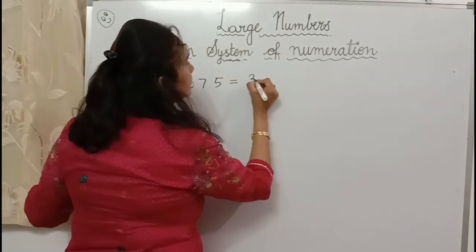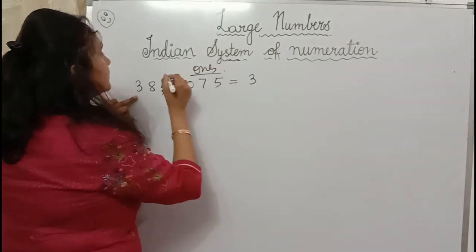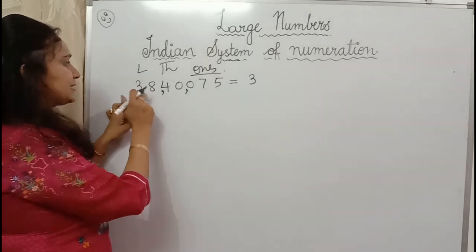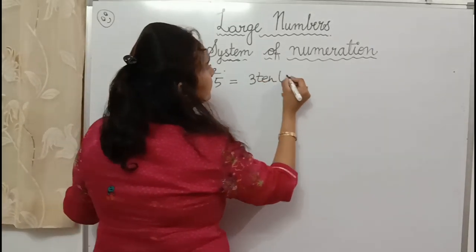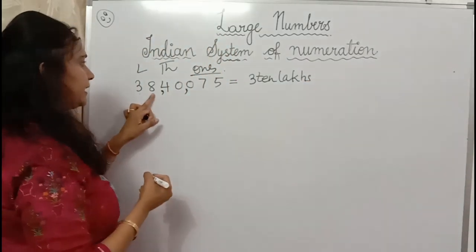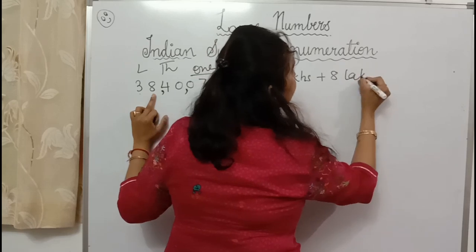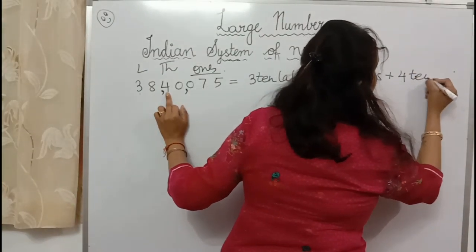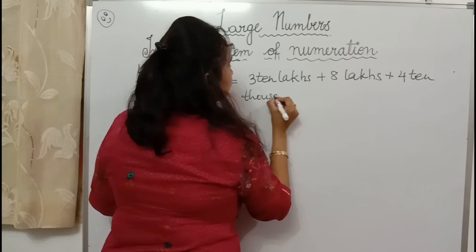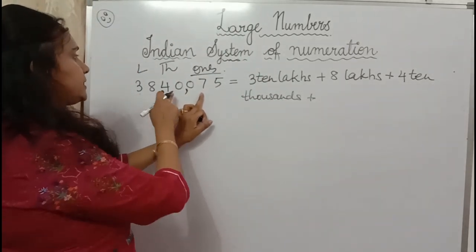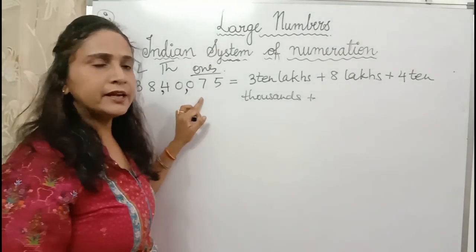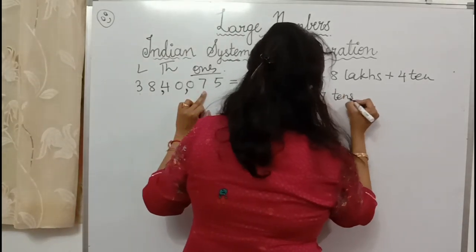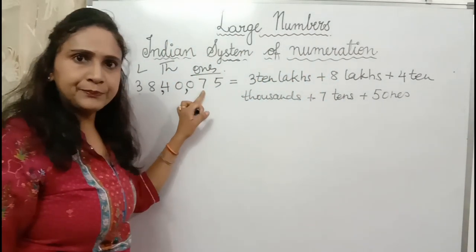First, expansion in words. Three is at ten lakhs place — so 3 ten lakhs. Plus eight at lakhs place — 8 lakhs. Plus four at ten thousands place — 4 ten thousands. Zeros we don't expand — we skip zeros. Seven is at tens place — 7 tens. Plus five at ones place — 5 ones.